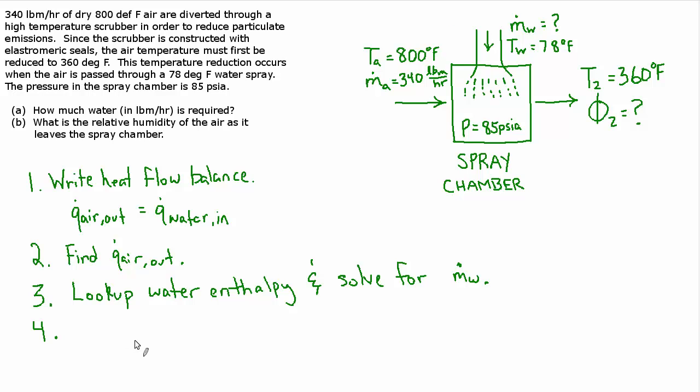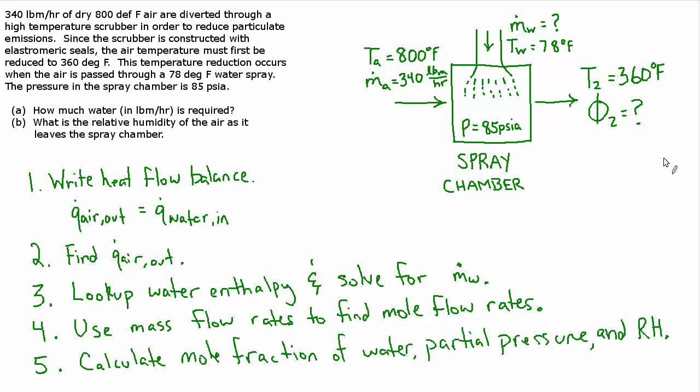We'll use the mass flow rates to find the mole flow rates, and you'll see where we're going with that. And lastly, we'll calculate the mole fraction of water, the partial pressure of the water, and ultimately the relative humidity, which is the answer to part B. Okay, so let's get started on part one.